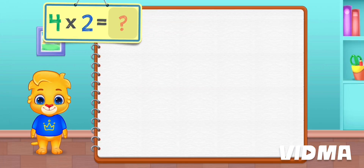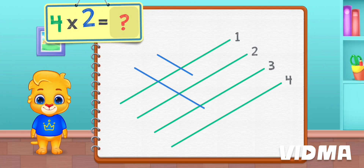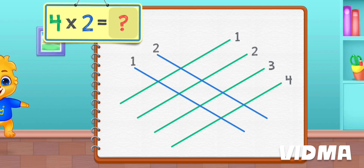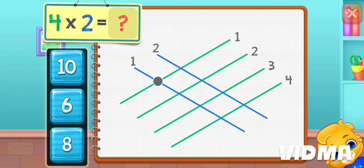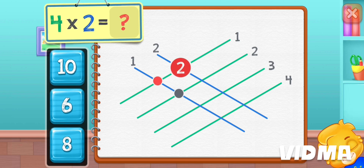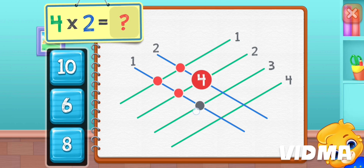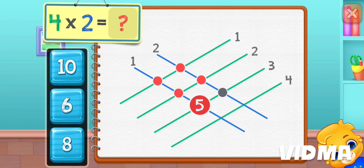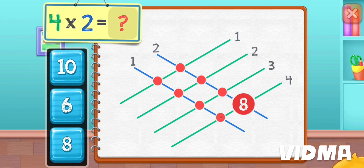Four times two equals — one, two, three, four, five, six, seven, eight.